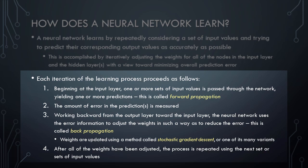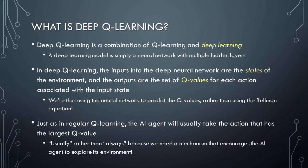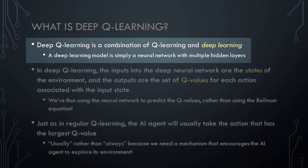Next, let's learn about deep Q learning. For this part, it will be useful to recall what you learned earlier about states, actions, rewards, and Q values. Deep Q learning is simply a combination of Q learning and deep learning. The term deep learning is used frequently in the AI and cognitive computing community, but it is not as complex as it might seem — a deep learning model is simply a neural network with multiple hidden layers. So if you take the simple neural network we discussed earlier and add one or more additional hidden layers, you have created a deep learning model.